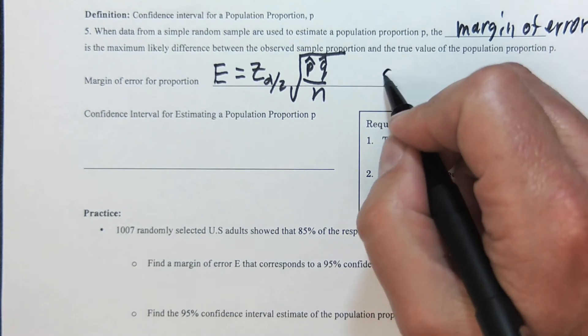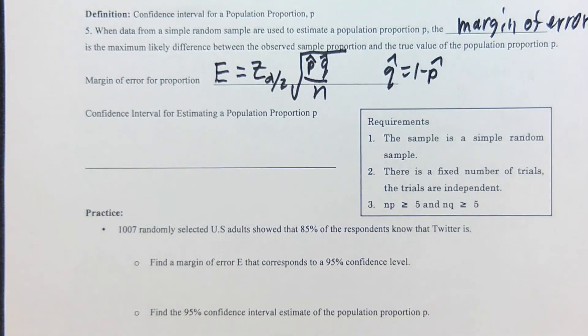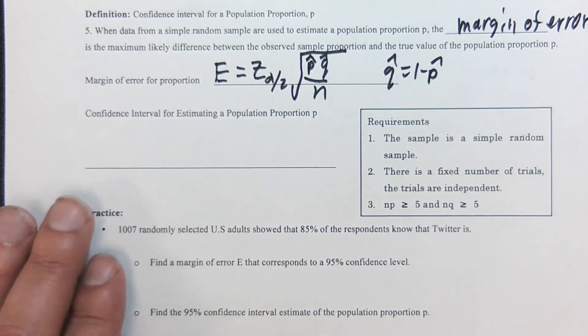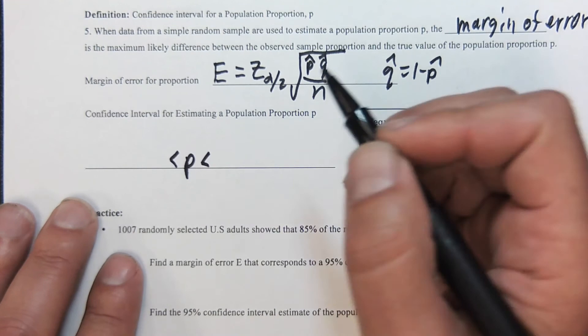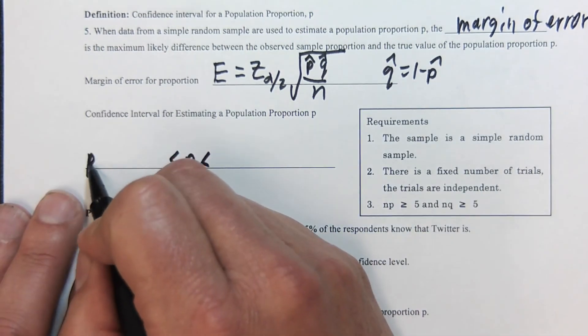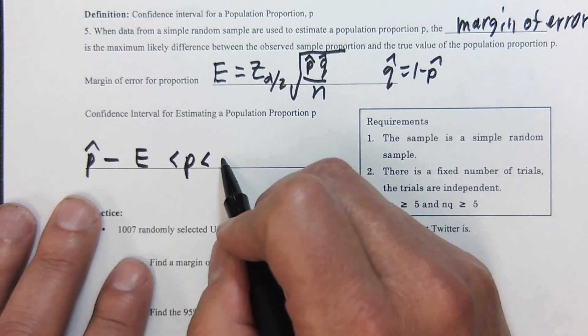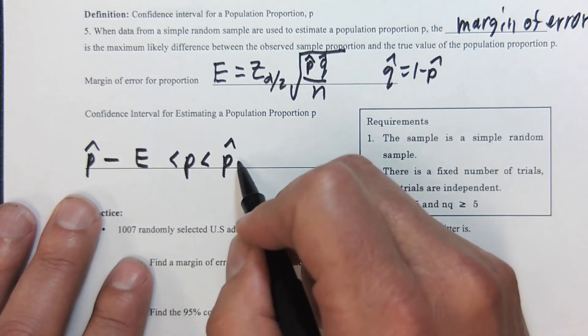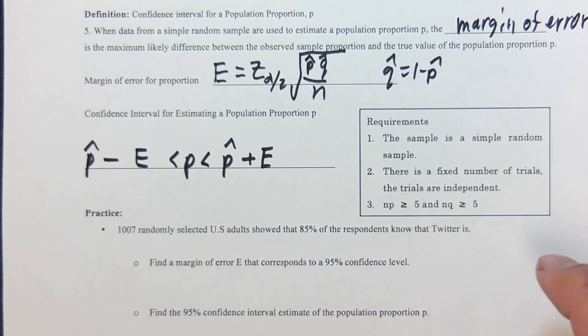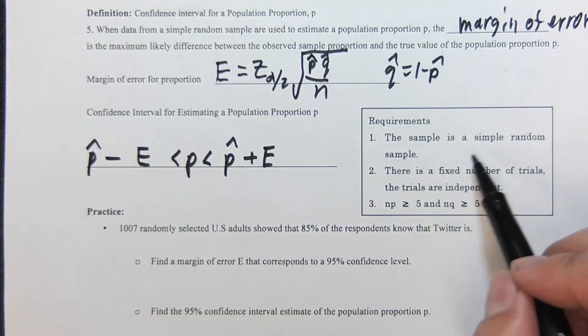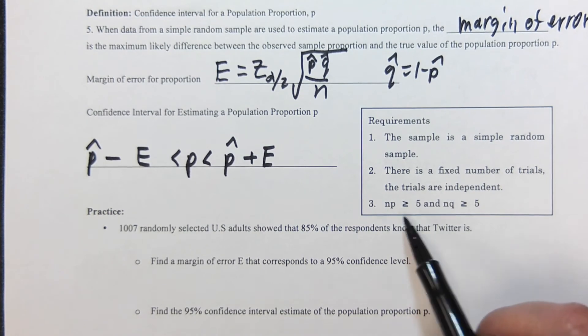The formula for that is here. Once again, Q hat is defined as 1 minus P hat. Here's the true proportion—we're going to take our sample proportion and subtract E for our lower boundary, and the sample proportion plus our error as the upper boundary. Requirements: it's got to be a simple random sample, fixed number of trials N, and these conditions must hold.